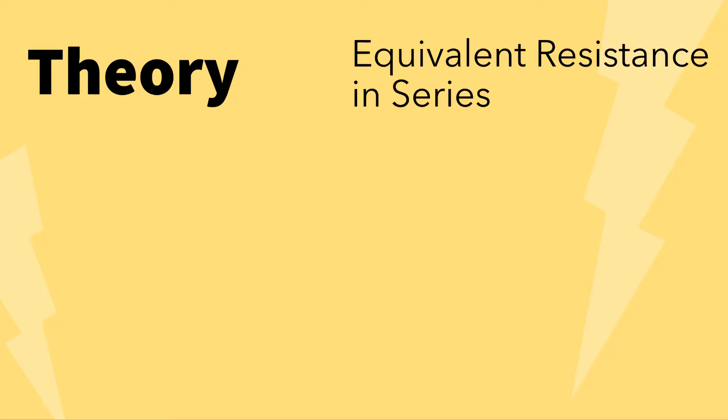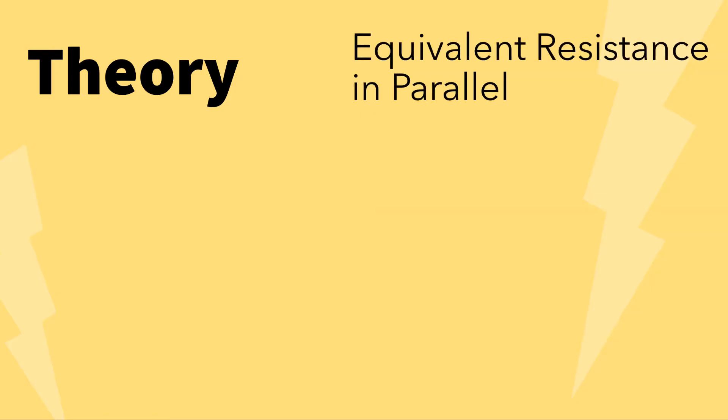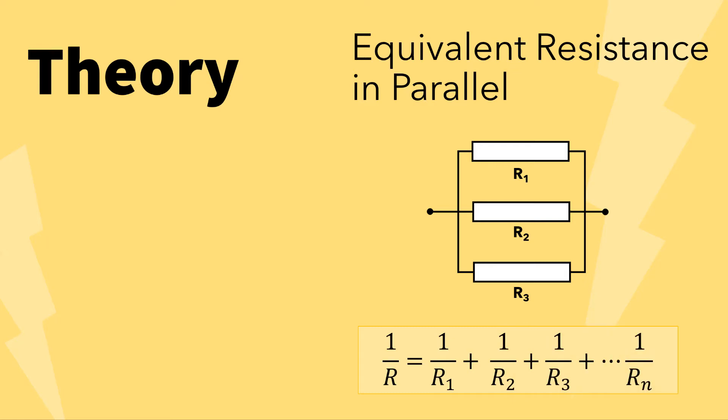For equivalent resistance in series as shown in this diagram, R equals R1 plus R2 plus R3 plus Rn. For equivalent resistance in parallel as shown in this diagram, 1 over R equals 1 over R1 plus 1 over R2 plus 1 over R3 plus 1 over Rn.